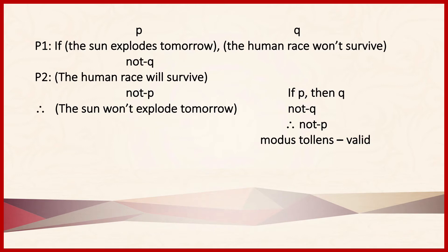Now notice that 'the human race won't survive' is labeled Q here, while premise two is labeled not-Q. Intuitively, that might seem backwards. But remember that with mixed hypothetical arguments, the hypothetical proposition will always be labeled P and Q. So the rest of the argument is labeled according to that. 'The human race will survive' is the negation of Q, and 'the sun won't explode tomorrow' is the negation of P.